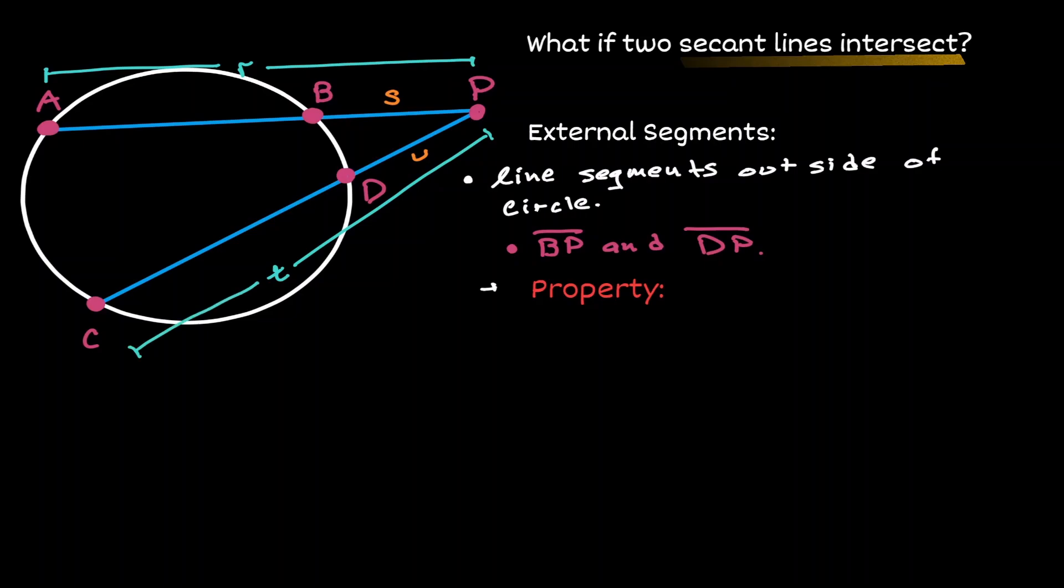There is a property between those line segments. If we get one external line, let's choose S, and multiply it by the whole secant line, which we have called R.